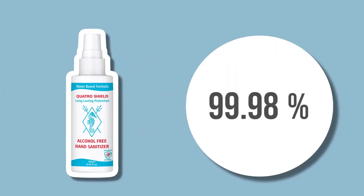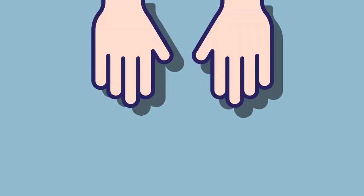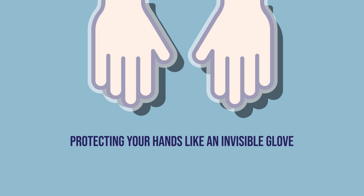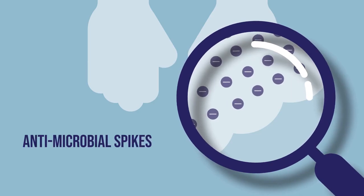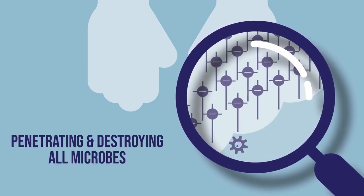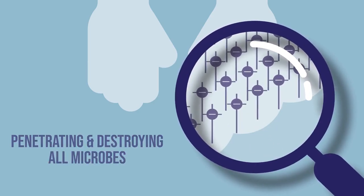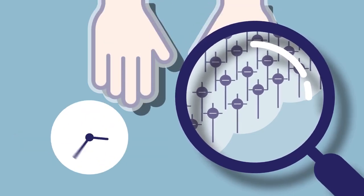It also creates a transparent coating, protecting your hands like an invisible glove. This layer contains electrostatic antimicrobial spikes, penetrating and destroying all microbes, providing full and gentle protection for six hours.